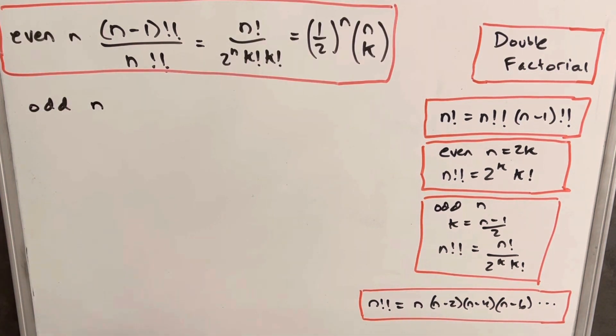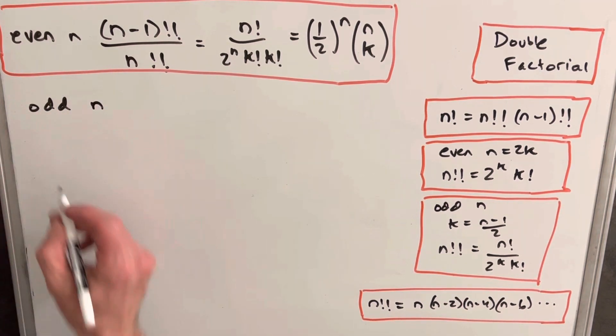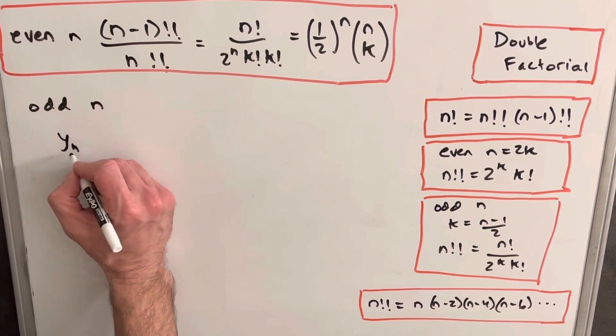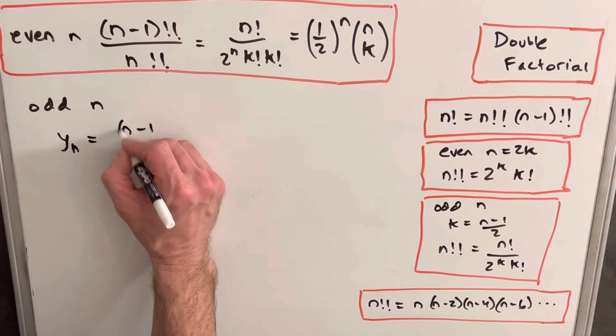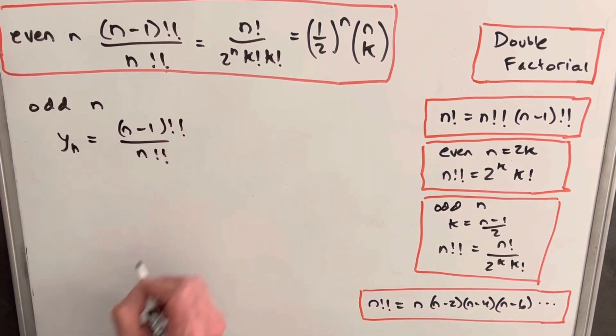Okay, next what I want to do is we want to find the exact same expression, but now we're assuming that n is odd. I just want a little notation, so I'm going to call this y_n, our n minus 1 double factorial over n factorial.